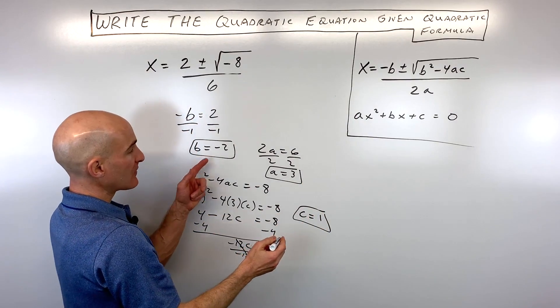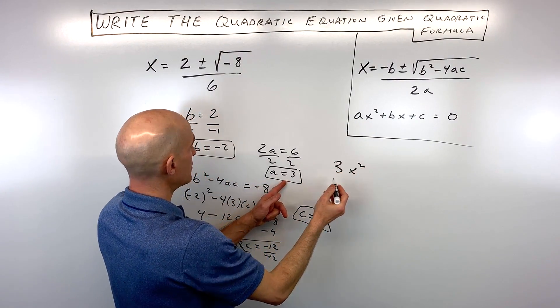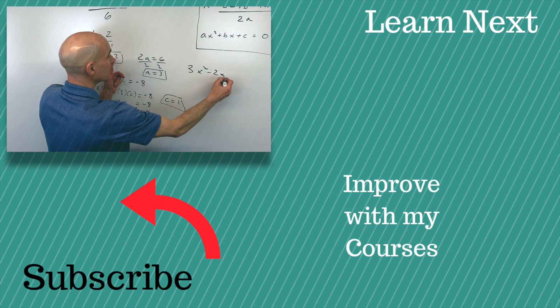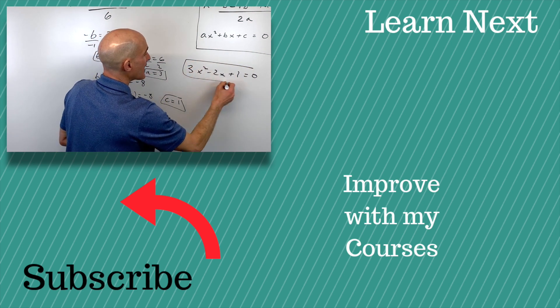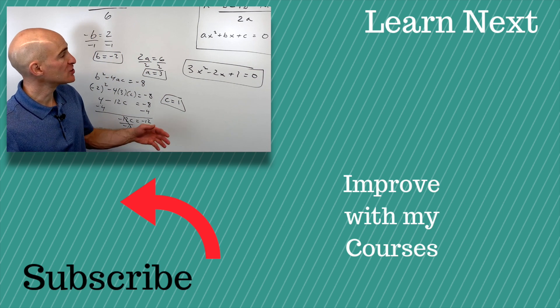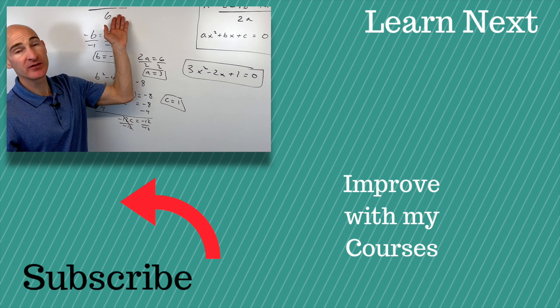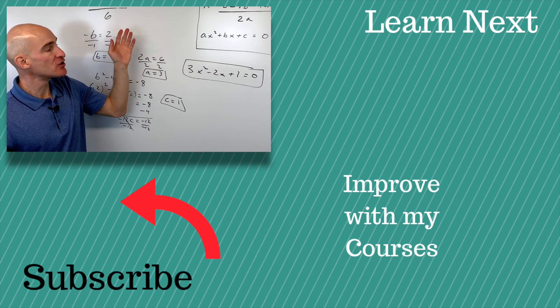So now if we put it all back together, we've got 3x squared minus 2x plus 1 equals 0. And that's the original quadratic equation that when you solve it using the quadratic formula will give you these two solutions here.